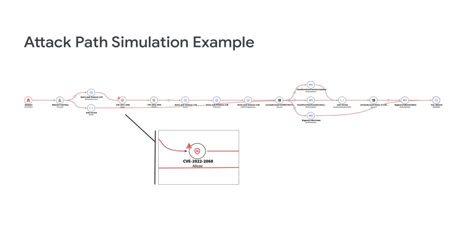Let's dig into more details. Here's an example attack path. To the very left, there is the attacker in the simulations. In this case, an external attacker is simulated, but you can also simulate insiders. And the attackers can have more or less capabilities to represent everything from an APT to a script kiddy.